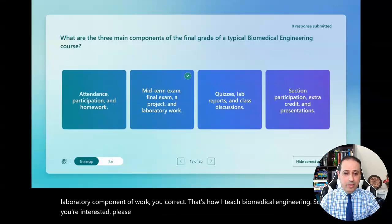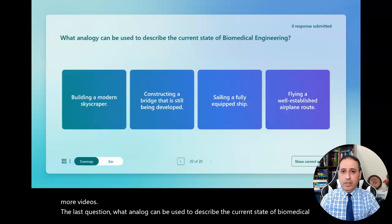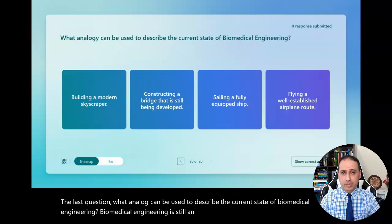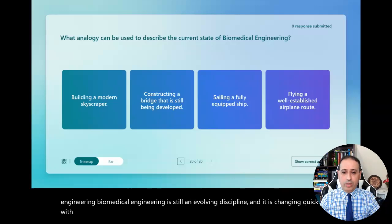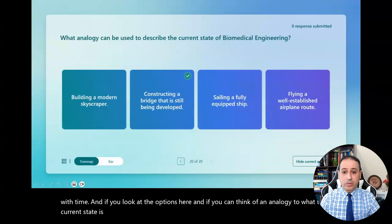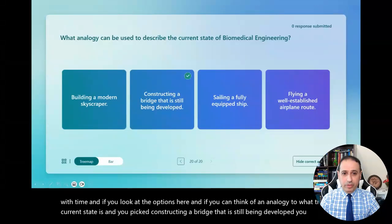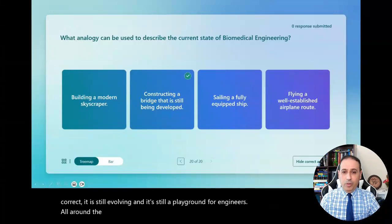Please subscribe to the channel and stay tuned for more videos. The last question: what analogy can be used to describe the current state of biomedical engineering? Biomedical engineering is still an evolving discipline and it is changing quickly with time. If you look at the options and picked constructing a bridge that is still being developed, you are correct. It's still evolving and it's still a playground for engineers all around the world. I hope this video was helpful.